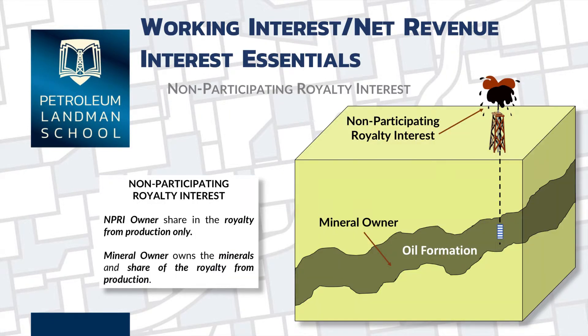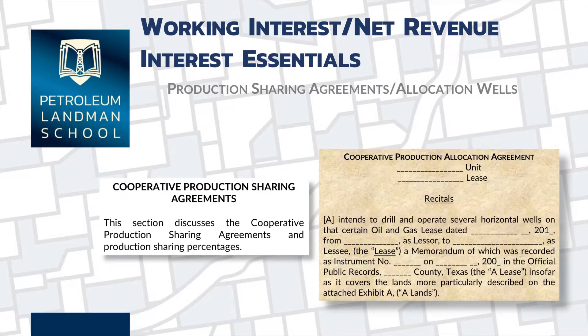This portion of the course goes in-depth on non-participating royalty interest calculations. This chapter deals with the calculations of interest in a production sharing agreement and allocation wells, and how to assess those interests when combining multiple units together to accommodate a new horizontal well.